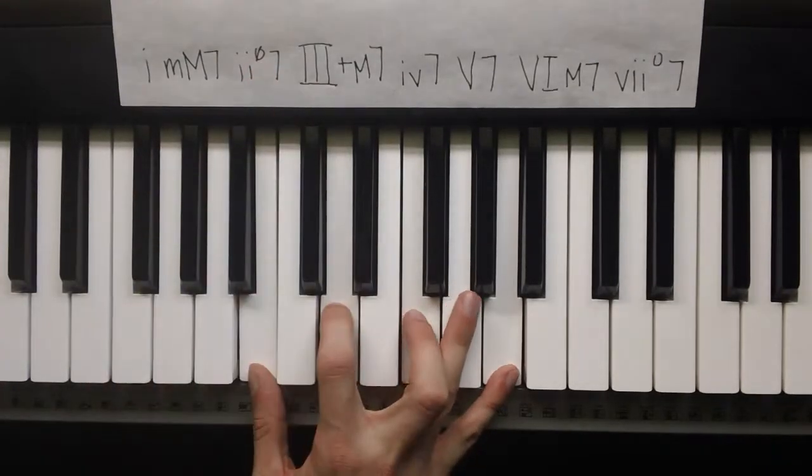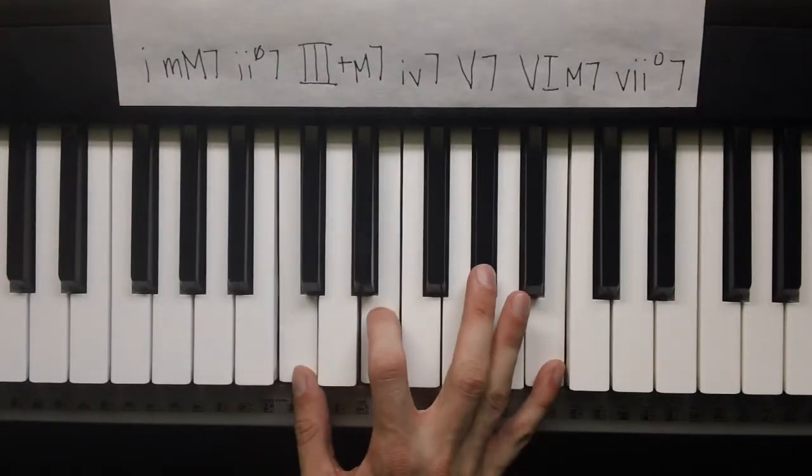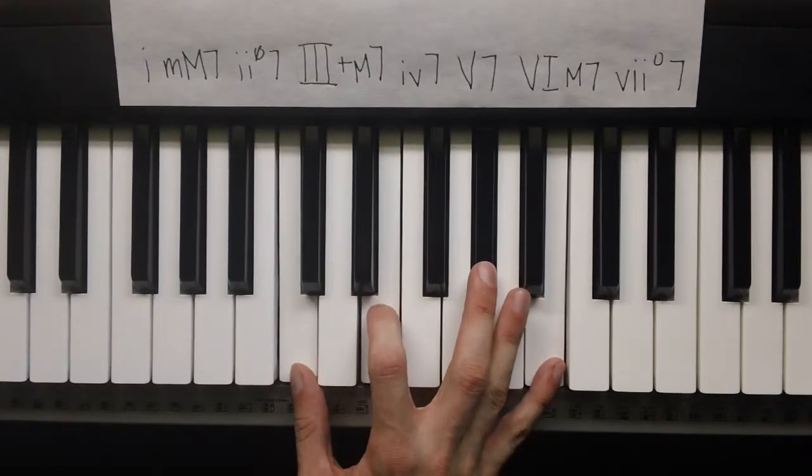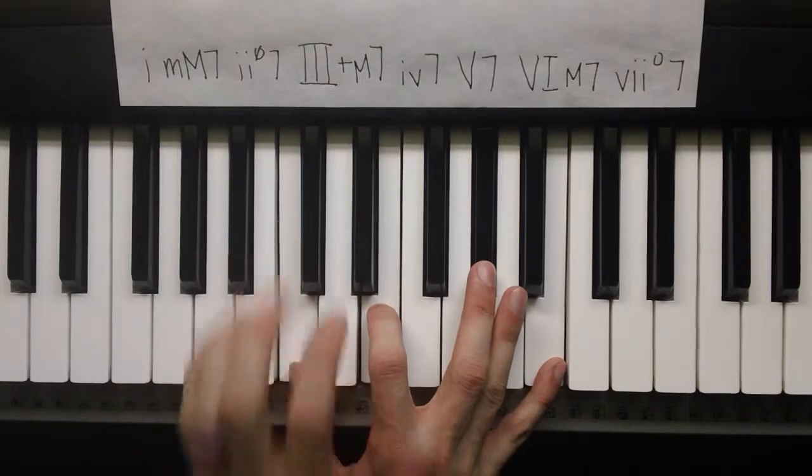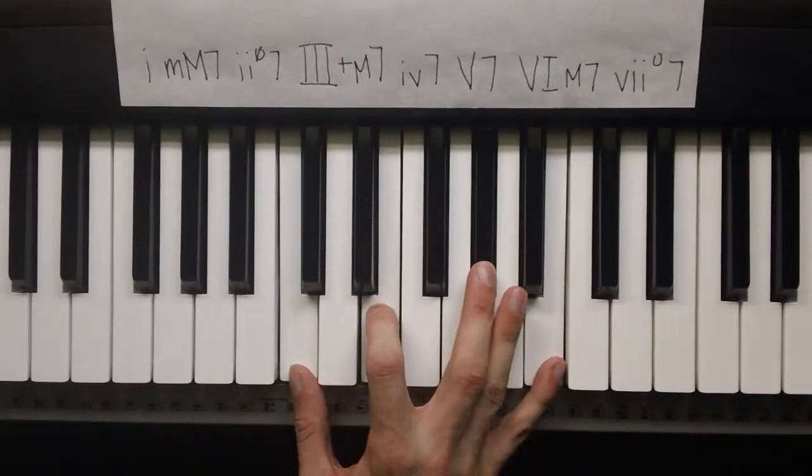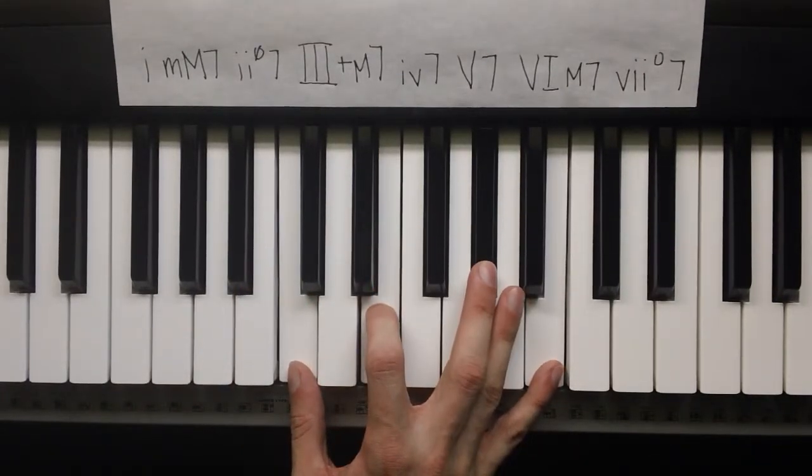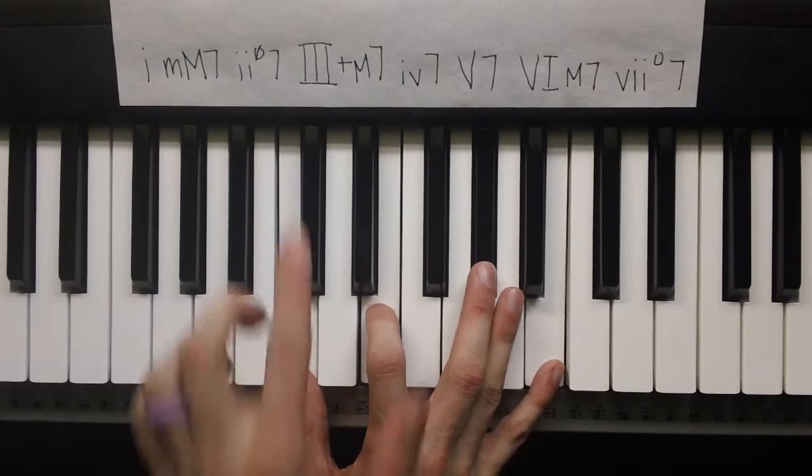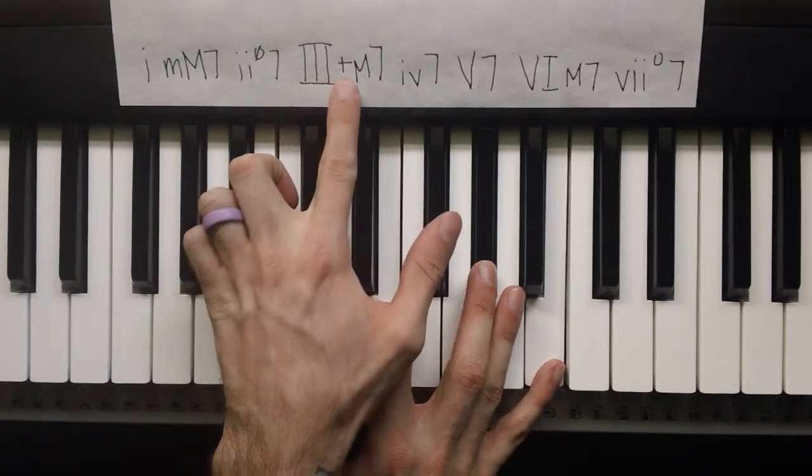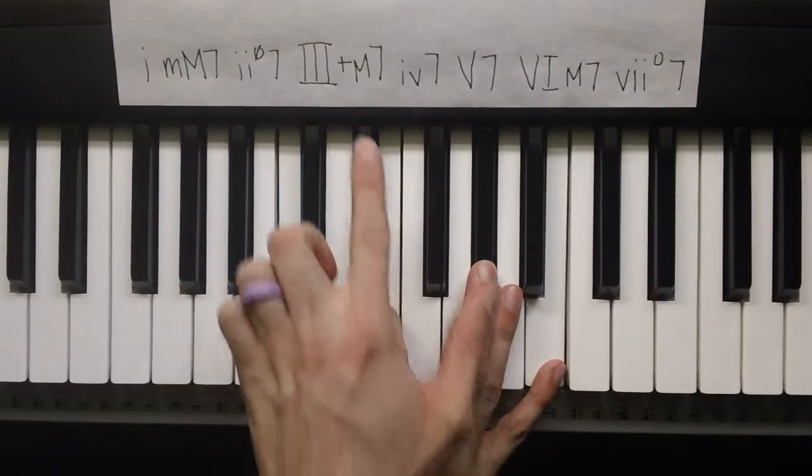The third one, uh-oh, that sounds funky, doesn't it? It's a 3-3-2, and we call this an augmented major 7th. So it gets capital III, plus for augmented, capital M for major, 7.